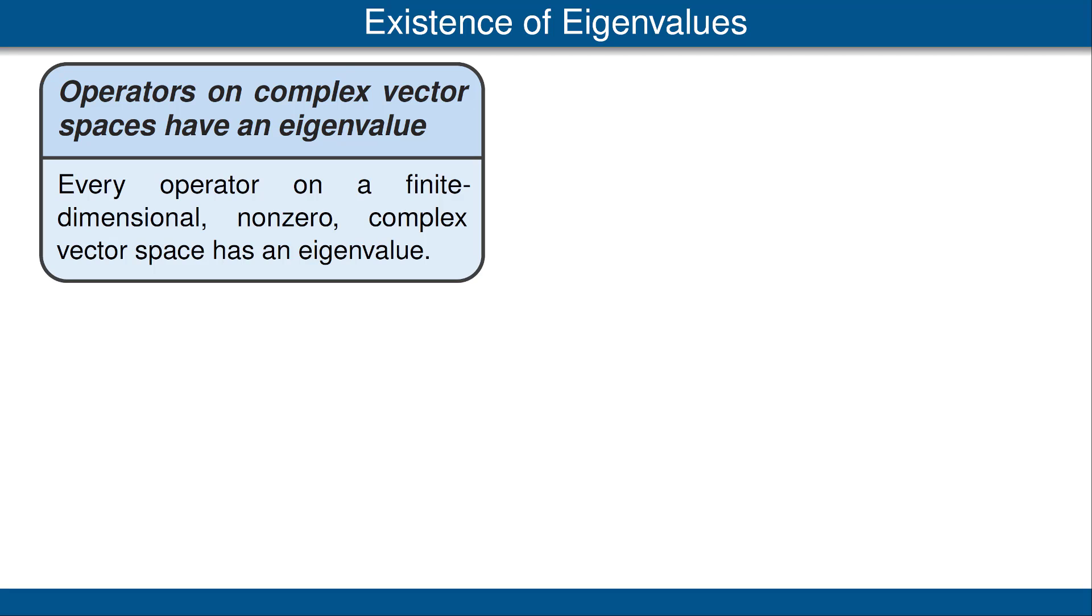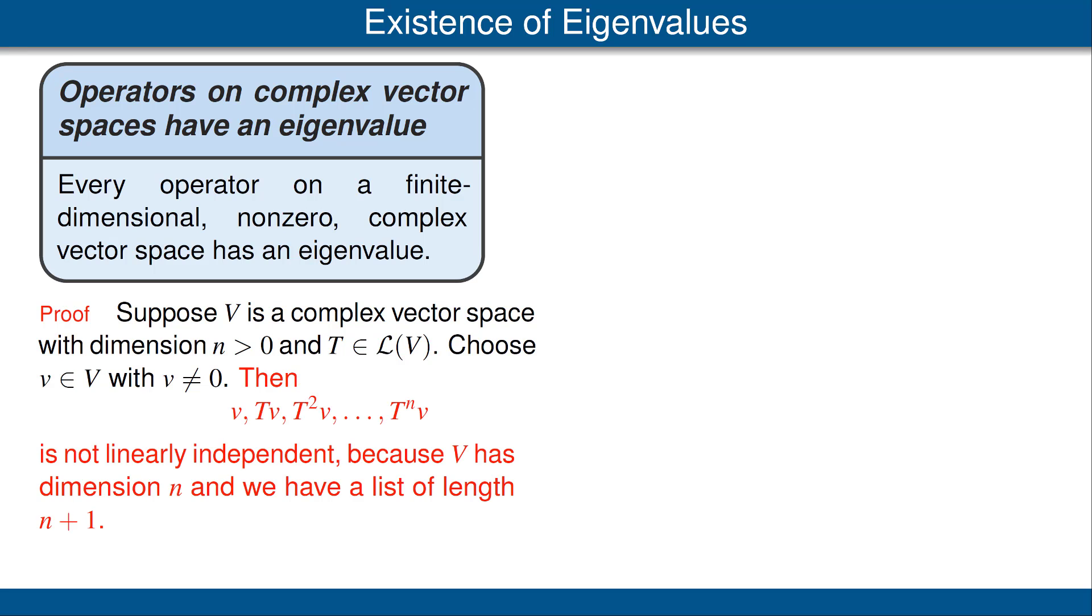Let's get rid of these examples and move to the proof of this theorem. We want to prove that every operator on a finite-dimensional, non-zero, complex vector space has an eigenvalue. Thus, let V be a complex vector space with positive dimension and let T be an operator on this vector space V. Choose a vector v in our vector space V with v not equal to zero. Thus, we have just used our hypothesis that V is not the zero vector space. Now look at the list v, T of v, T squared of v, up to T to the n of v. This list has length n plus 1, and we are in a vector space of dimension n. Thus, this list cannot be linearly independent.